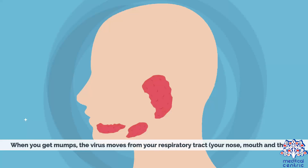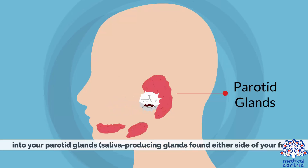When you get mumps, the virus moves from your respiratory tract — your nose, mouth, and throat — into your parotid glands, the saliva-producing glands found on either side of your face, where it begins to reproduce. This causes the glands to swell.